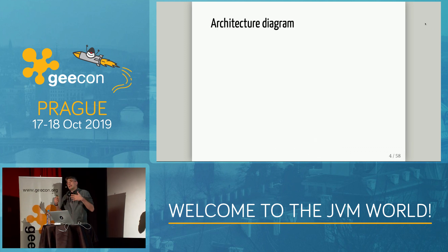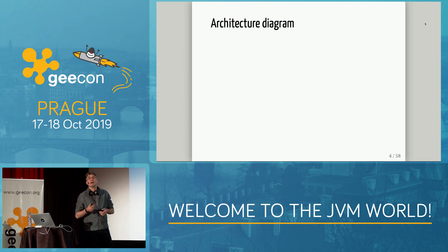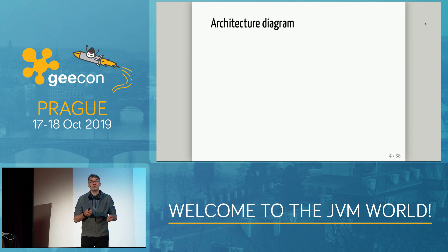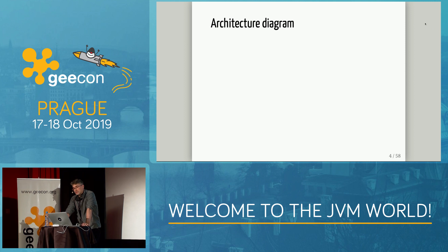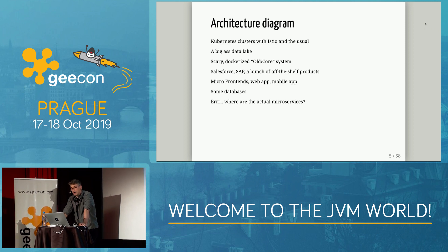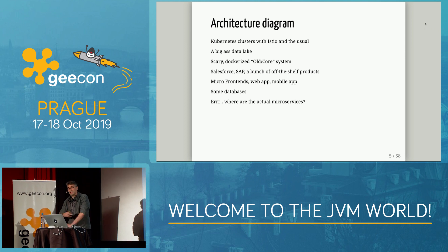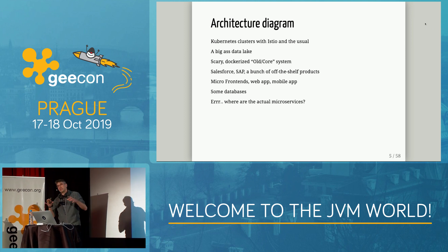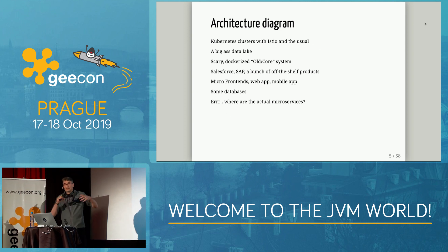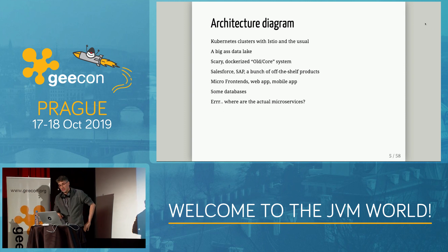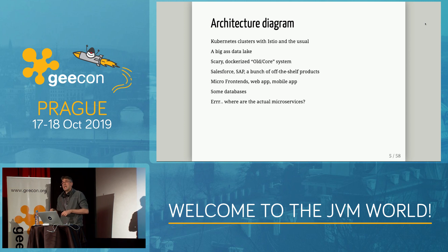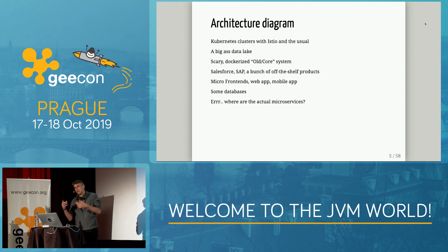Whenever I enter a new company and try to help them, I ask for an architecture diagram — I want to learn what the system looks like and where to put features. Usually they give me a diagram showing Kubernetes clusters with Istio, a big data lake, a dockerized old core system, surrounding applications like SAP and Salesforce, mobile devices, micro frontends, some databases — and that's it.